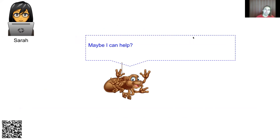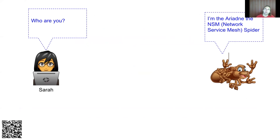This is where we see Ariandre, the NSM spider, coming in and saying, 'Maybe I can help.' Ariandre is sort of the mascot for the Network Service Mesh team — a spider for weaving web seemed like a good idea.